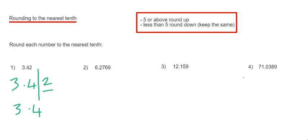Let's move on to example 2. So this time we've got 6.2769. Again, we want to round it off to the nearest tenth. So that means one number after the decimal point. So put a line in there.